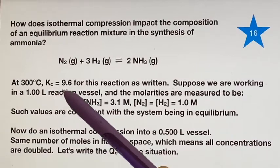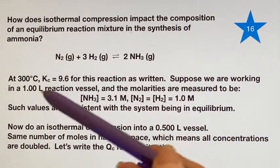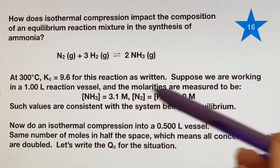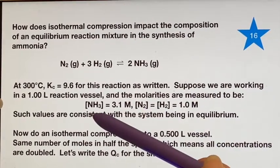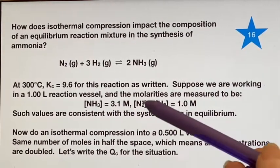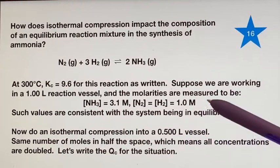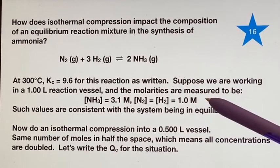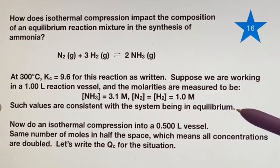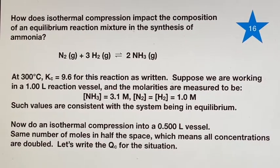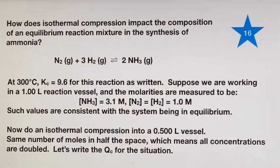Kc should be 9.6, and if we were working in a one liter reaction vessel, the molarities are measured to be ammonia concentration 3.1 M, and both the diatomics have a concentration of 1.0 M. These values are consistent with it being at equilibrium. Let's just double check that.